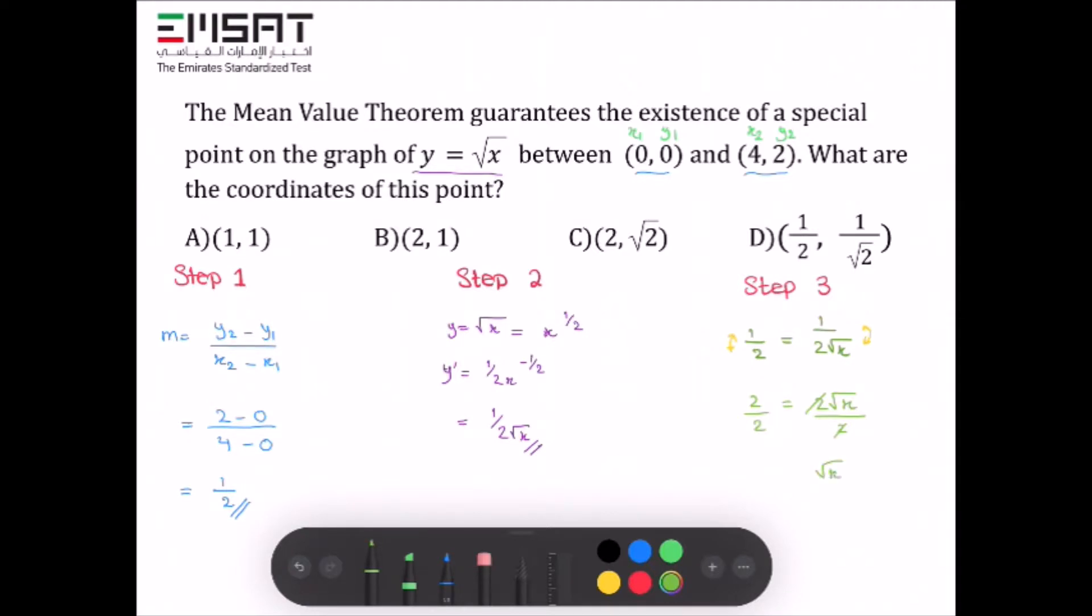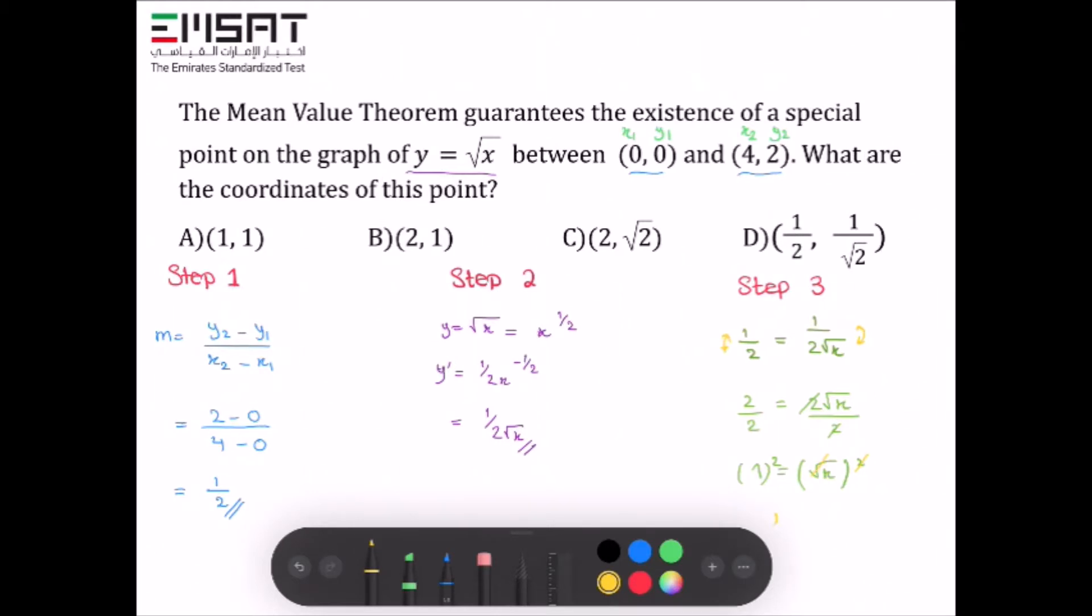Now we need to eliminate the square root. To do this, square both sides. The square root cancels out, giving us x = 1.